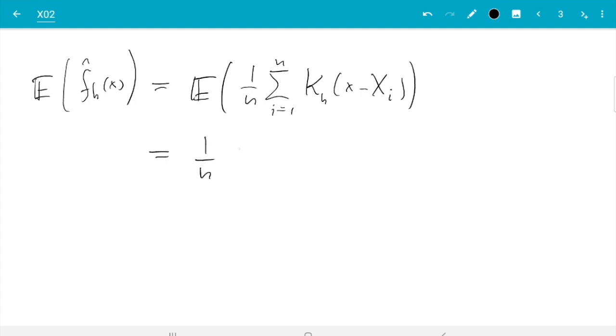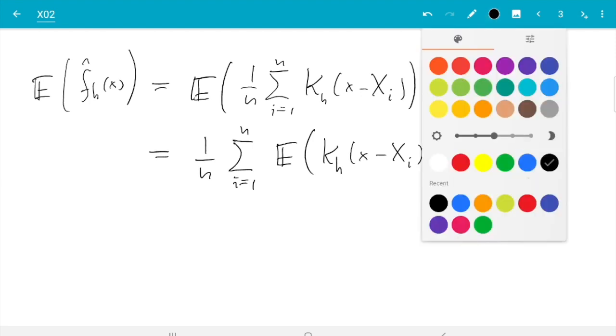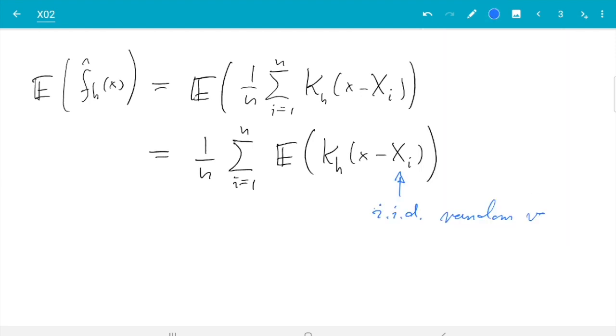So we get one over n sum i from one to n, expectation of k_h(x minus Xi), and now the next step is to remember that the Xi are iid random variables. So as far as the expectation is concerned, these are all interchangeable.